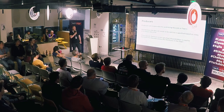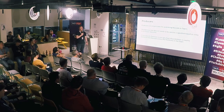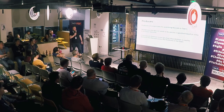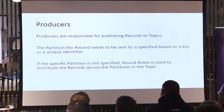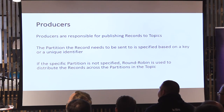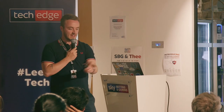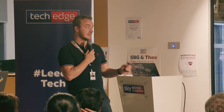Producers are responsible for publishing the records to topics. When we send messages to Kafka, we can specify the actual partition. If we don't, it's sent across as round-robin — so if we had 100 records to fire into a Kafka topic and didn't specify, they'd literally be spread everywhere. But if there's a specific partition we need to send to, we can specify that and send it directly to that one.